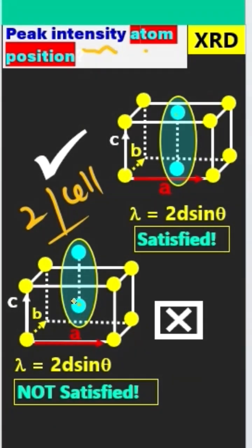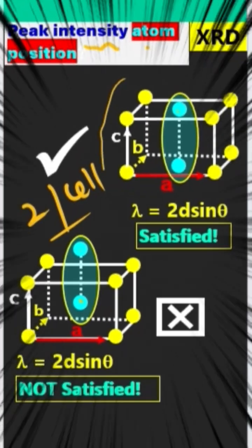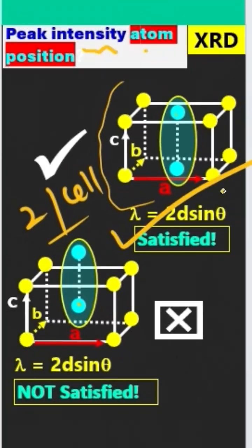Now we can see that these additional atoms are located at different positions. From this unit cell, the Bragg's law is satisfied, and we get peaks.